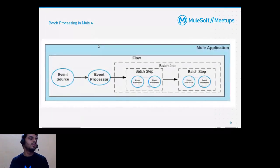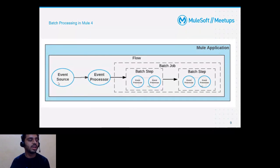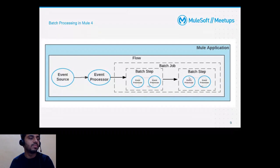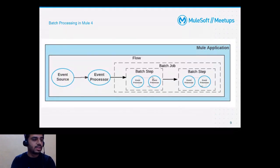A batch job structure typically starts with an event source like an HTTP listener, followed by processors — for example, fetching data from a third-party system like Salesforce — and giving that whole data to the batch job so it can synchronize it to some database. Within that batch job, we can have batch steps, and we can have multiple batch steps, each having their own segregated sections.